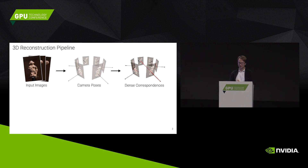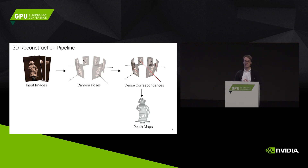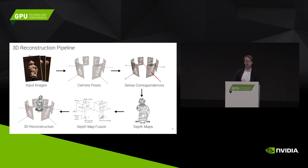We want to have a dense 3D reconstruction. So the next step is, for each of the images, we want to get a dense depth map. We do this by shooting a ray through every pixel that projects into lines onto the other images. On these lines we find correspondences — we try to find the pixel that looks closest to the pixel in the input image. If we do this, we get a set of depth maps. For each of the input images we have a depth map, but that's not a full 3D reconstruction — this is just 2.5D reconstruction.